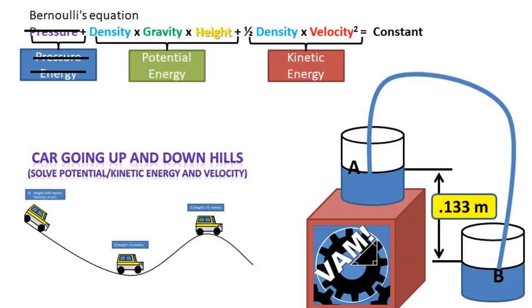Now let's use our friend the Bernoulli equation to solve for velocity. We can eliminate the pressure portion of the formula because atmospheric pressure is affecting both ends of the siphon. In order to solve this problem, we need to think about how potential and kinetic energy work.